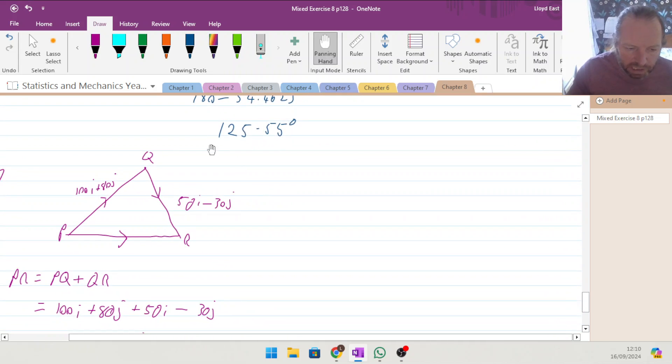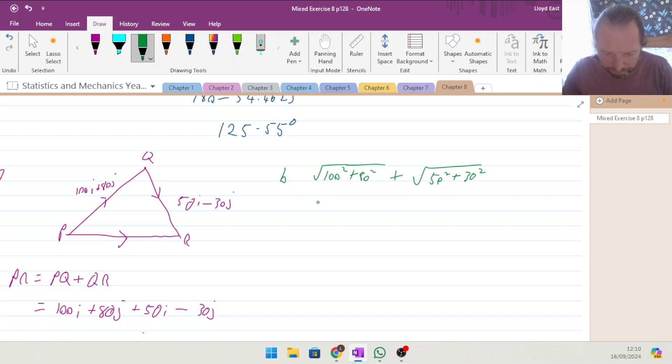So let's take that, part B, and we are going to have the square root of 100 squared plus 80 squared plus the square root of 50 squared plus 80 squared. Not bothered about the minus because the two minuses make it a plus anyway. So square root of 100 squared plus 80 squared added to the square root of 50 squared plus 30 squared, all in one long line on the calculator, and it gives us 186.372 meters.